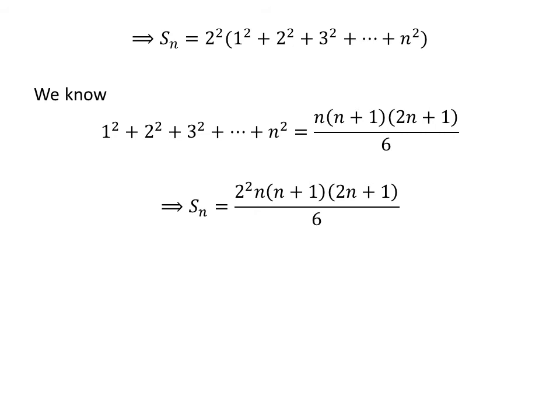As 2 times 3 is 6, so 2 in the numerator and factor 2 of 6 cancels out each other. And as Sn denotes sum of squares of first n even numbers, so: